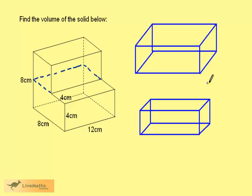A sketch of the two cuboids might help. Look at the larger one first. We can see it's 12 cm long, 8 cm wide, and 4 cm high.